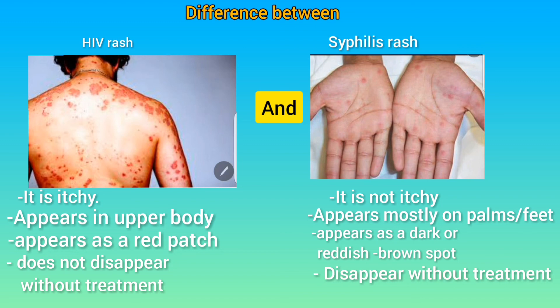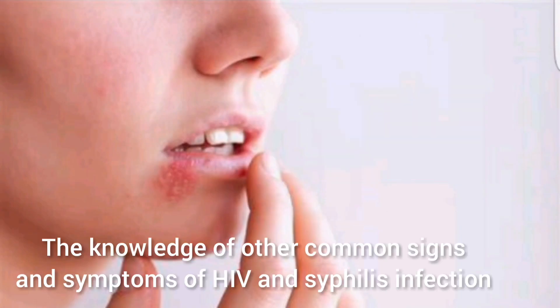The fifth difference is that HIV rash usually appears a few days after exposure, and it is also the first sign that appears when a person is exposed to the infection, while syphilis rash appears in the second stage of the infection, and usually when a sore is healing or a few weeks after the sore has healed.